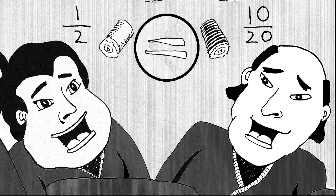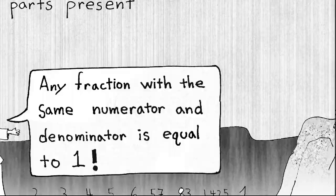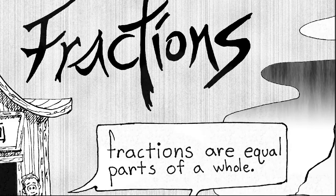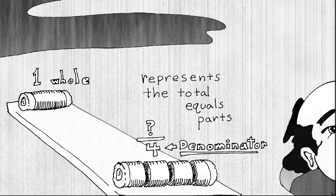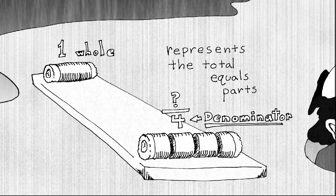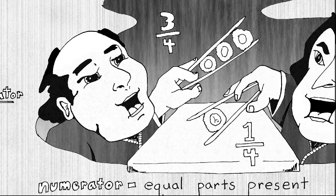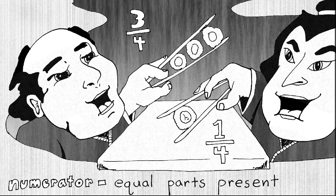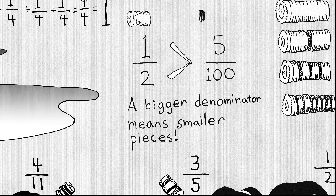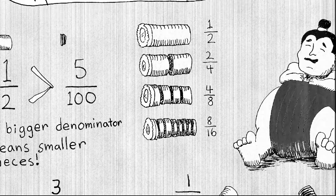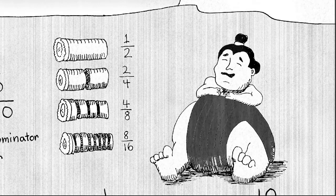So remember: fractions are equal parts of a whole, and fractions live between whole numbers. The denominator represents the total equal parts. The numerator represents the equal parts present. Any fraction with the same numerator and denominator is equal to one. A bigger denominator means smaller pieces. And sometimes fractions might look very different but actually represent the same amount of value.